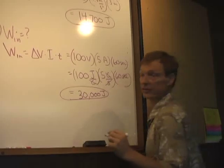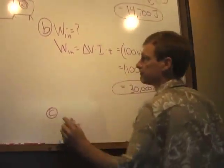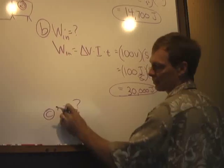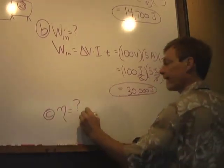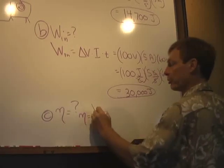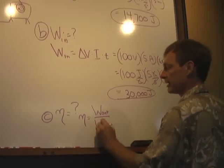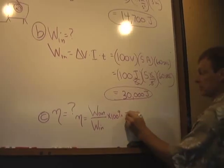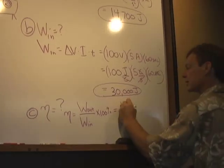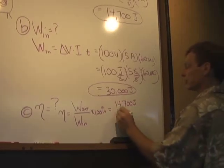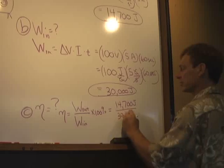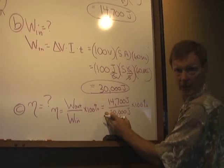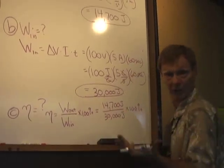So finally, let's figure out what the efficiency is. Efficiency is given by eta, that end with that kind of hangy thing right there. All right. Efficiency, we'll use a percent efficiency. It's the output work divided by the input work times 100%, which is 14,700 joules divided by 30,000 joules times 100%. And did we do it right? Yeah, it's going to be less than 100%. You can't do better than 100. You can't even do 100% work. You can't get more out than you put in, or even what you put in.